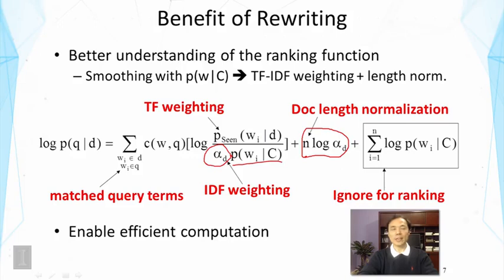Because it means we don't even have to think about the specific way of doing smoothing. We just need to assume that if we smooth with this collection language model, then we would have a formula that looks like TF-IDF weighting and document length normalization. What's also interesting is that we have a very fixed form of the ranking function. And see, we have not heuristically put a logarithm here. In fact, you can think about why we will have a logarithm here.